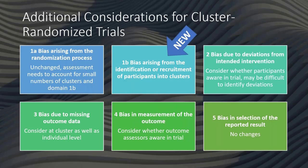In domain three, we've noted that we should consider missing data at cluster as well as individual level. In domain four, consider whether the outcome assessors were aware that the trial was going on. And in domain five, no changes at all. Thank you.